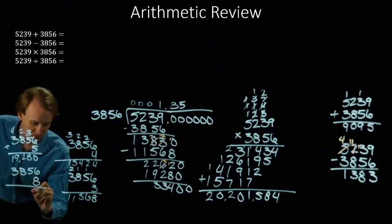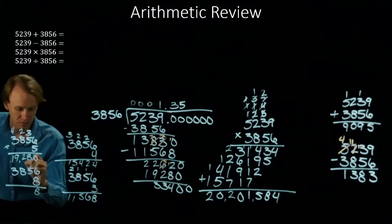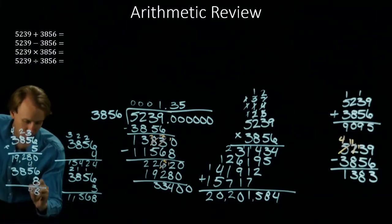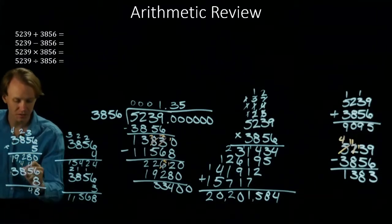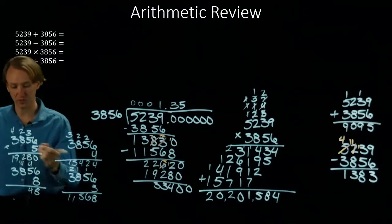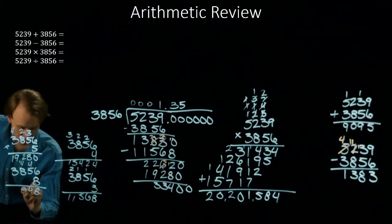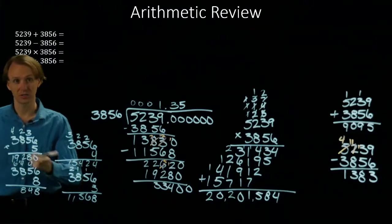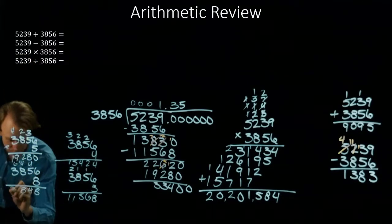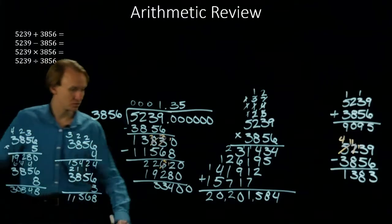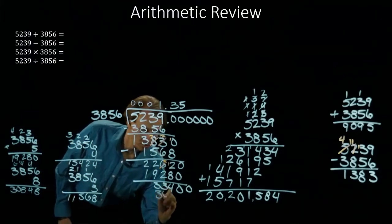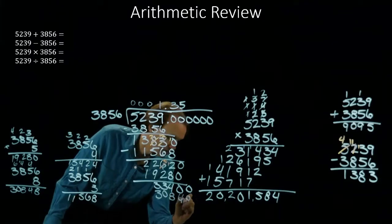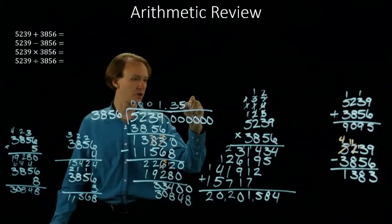So 3856 times 8. 6 times 8 is 48. 8 times 5 is 40. Plus 4 is 44. 8 times 8 is 64. Plus 4 is 68. 3 times 8 is 24. Plus 6 will give me 30. So I'd write down 30,848. And I'd put an 8 up here.